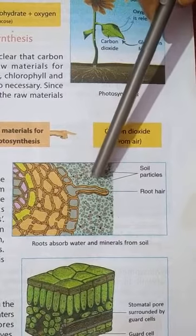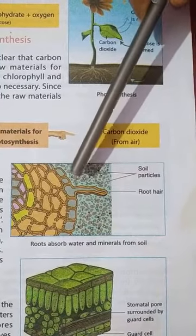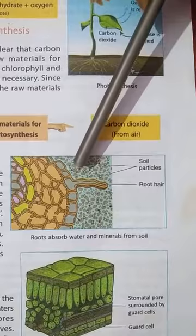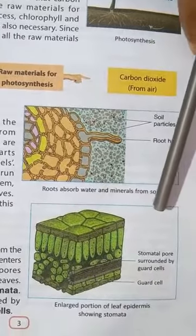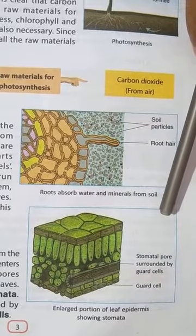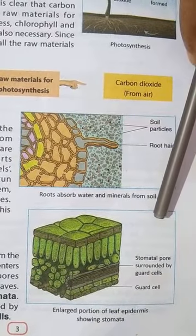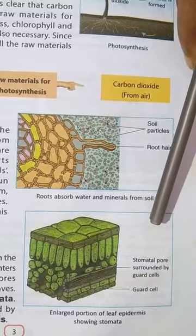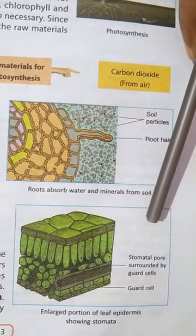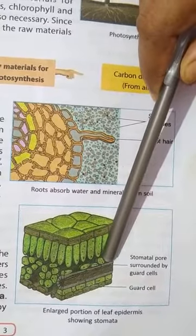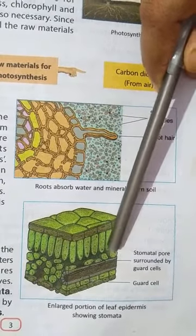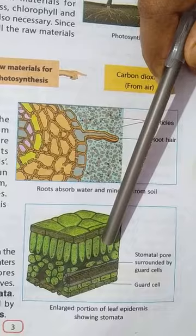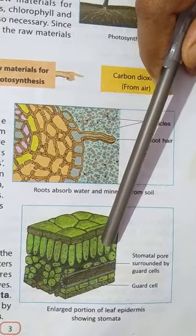Water and minerals are absorbed from the soil through roots and transported by xylem to the leaves. The next raw material is carbon dioxide, which is present in our atmosphere and enters the leaf through tiny pores on the surface of leaves known as stomata. Stomata are guarded by cells known as guard cells. Exchange of gases takes place through stomata.